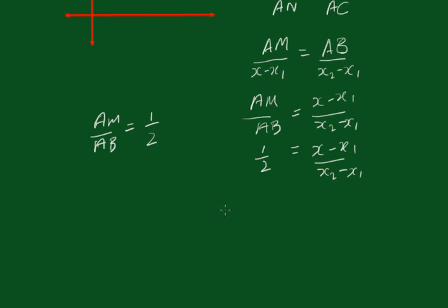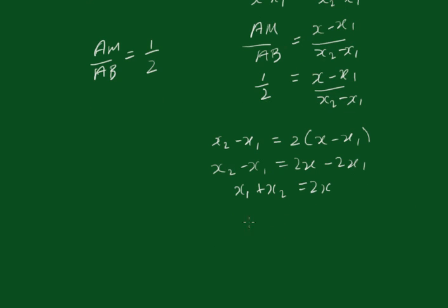And of course that means that x₂ minus x₁ equals 2 times (x - x₁). Removing the brackets we get 2x minus 2x₁. Take the 2x₁ across the other side we get x₁ plus x₂ equals 2x. Therefore x equals (x₁ + x₂)/2.